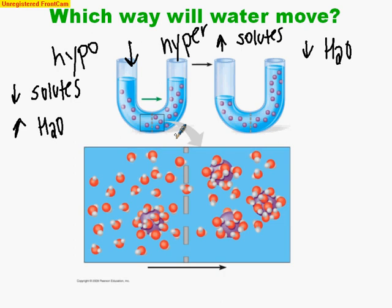If it's hypertonic, more solutes, less water. We've said that water always moves down its gradient during osmosis — water moves from high to low concentration. That is why the water is moving to the right in this U-shaped tube, because water concentration is lower on the right where it's hypertonic, and that is the direction water will move. If you remember that water always moves towards the hypertonic, you will be okay. We'll look at more examples in class.